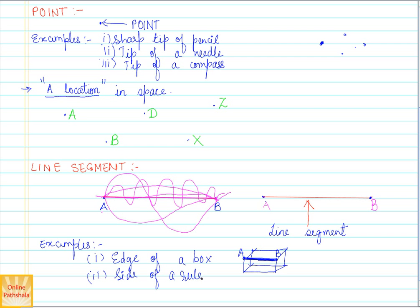Another example is one side of a ruler. A ruler has four sides, and each of those sides is a line segment. The key things to remember about a line segment: first, a line segment has two endpoints. We represent a line segment using the letters A and B with a bar over them — written as line segment AB.